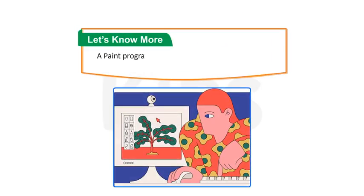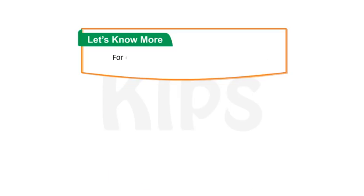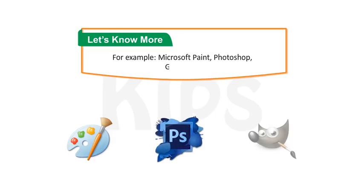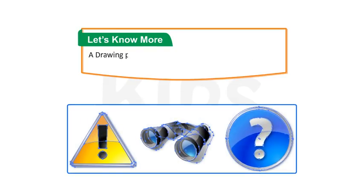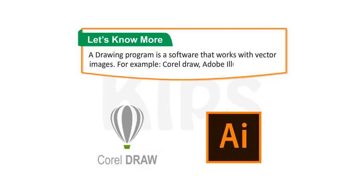A Paint program is a software that allows users to draw and modify a bitmap image. For example, Microsoft Paint, Photoshop, GIMP, etc. A drawing program is a software that works with vector images. For example, CorelDraw, Adobe Illustrator, etc.